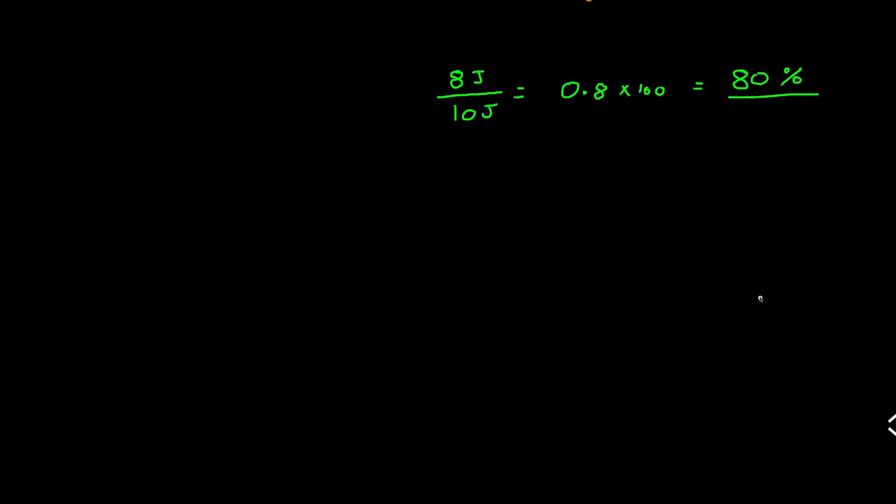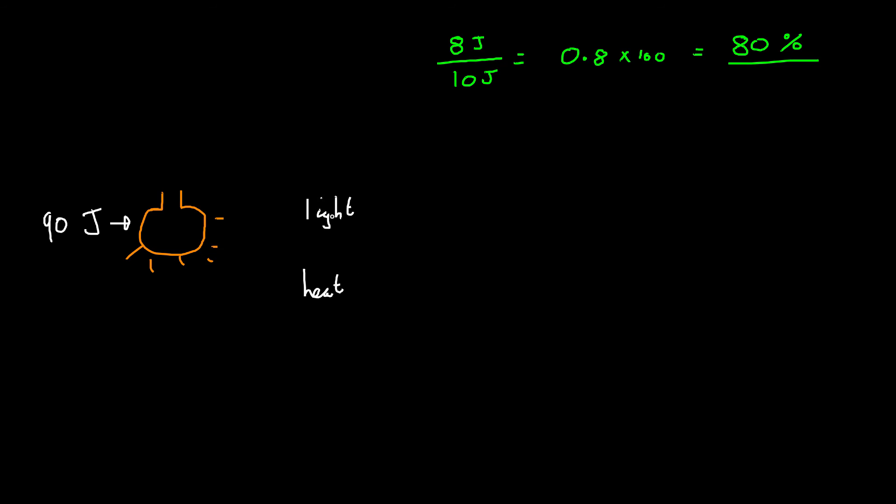Now let me give you one more example. If we had a light bulb. So this is a light bulb. Whatever. It's giving out light. This is a light bulb. And we are supplying, let's say 90 joules of energy into the light bulb. That's going to be electrical energy. Now what we're getting out is pretty much light and we're getting out heat. And let's say for example we obtain 15 joules of light and 75 joules of heat.